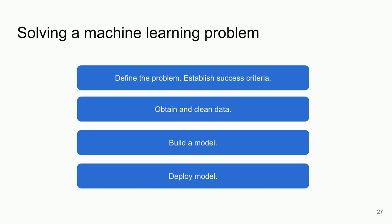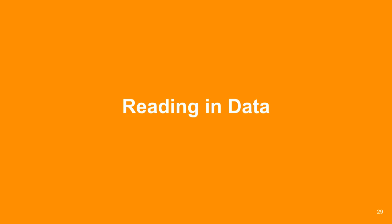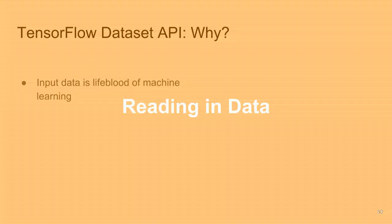From a 30,000-foot view, machine learning problems generally follow this flow: define the problem, identify the data, set clear success metrics, obtain and clean data, build a model, deploy that model. Today we're only going to address elements applicable to the two middle steps — reading in data and building a model.